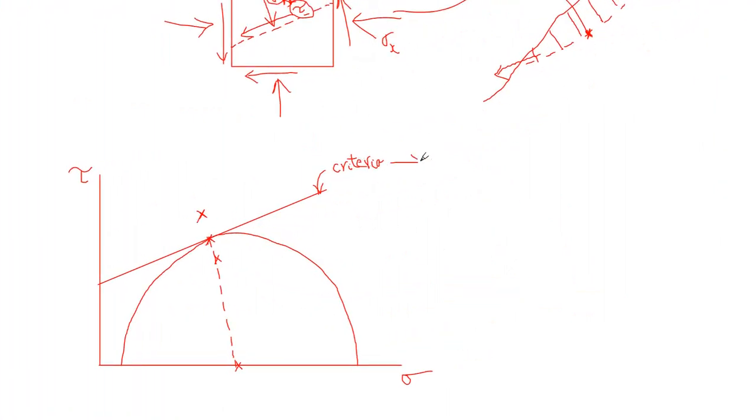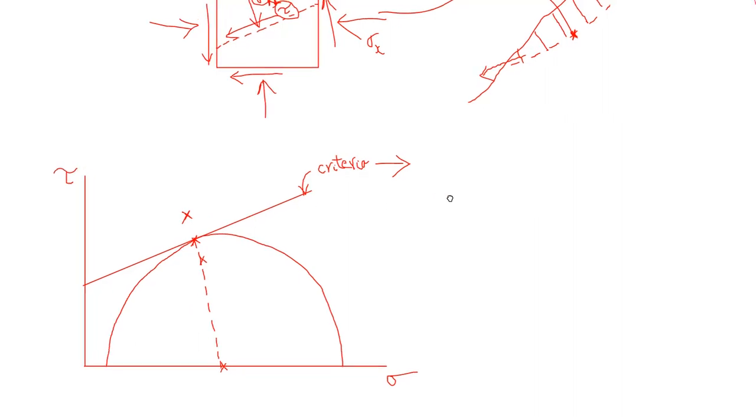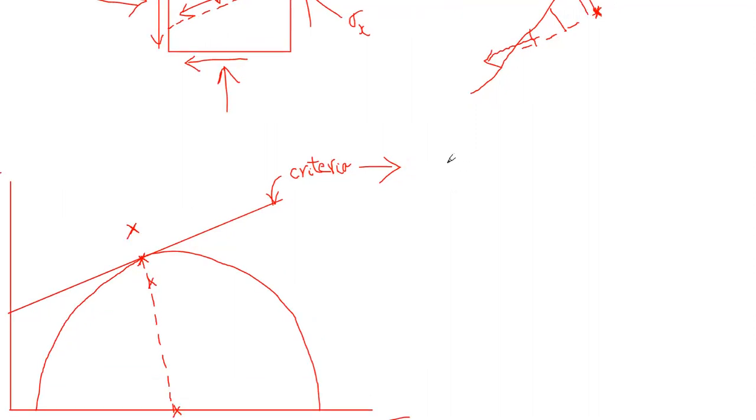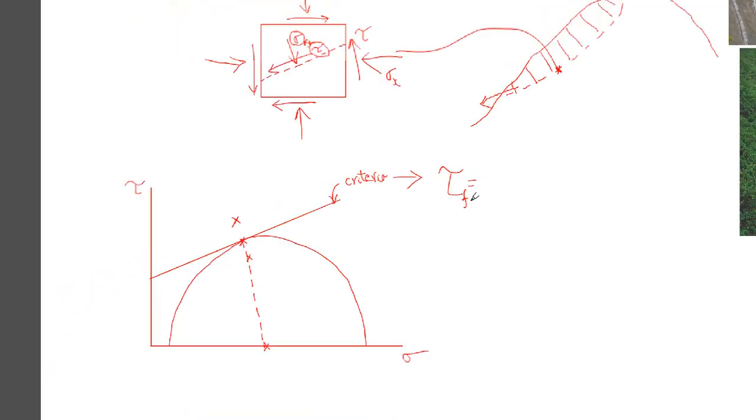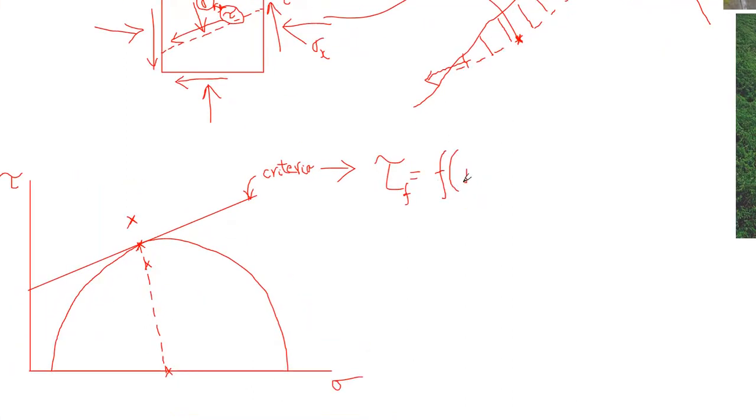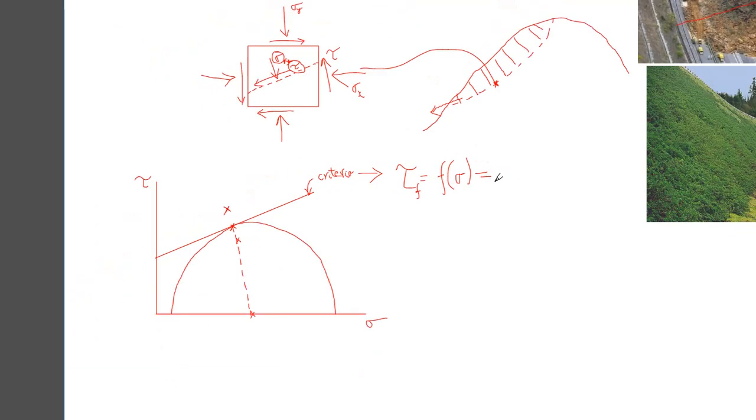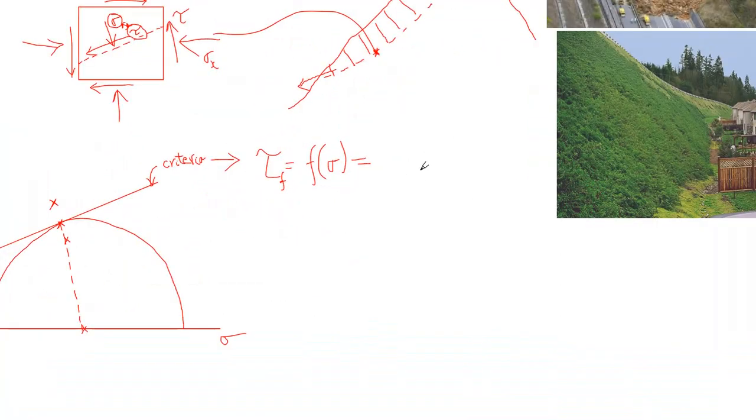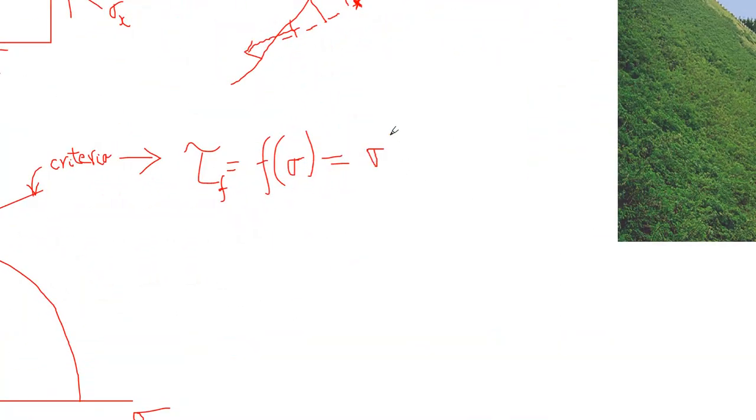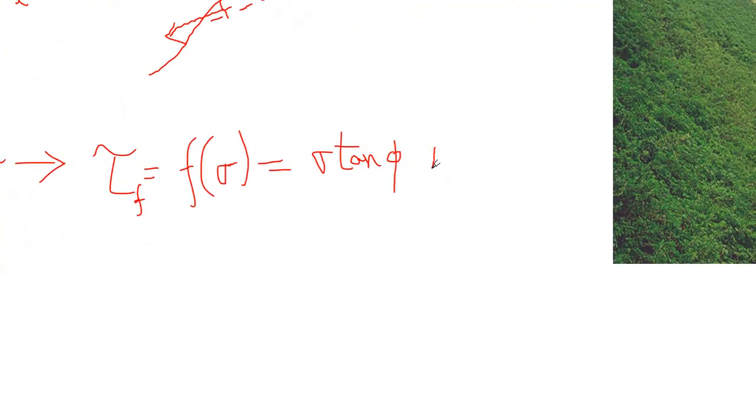And before we get to the circle, we need this criteria in a form which is in the form of an equation. So this criteria in the form of an equation is quite simply: tau - how we know tau at failure is a function of sigma. And for a straight line, that is quite simply in this case sigma tan(phi) plus c.